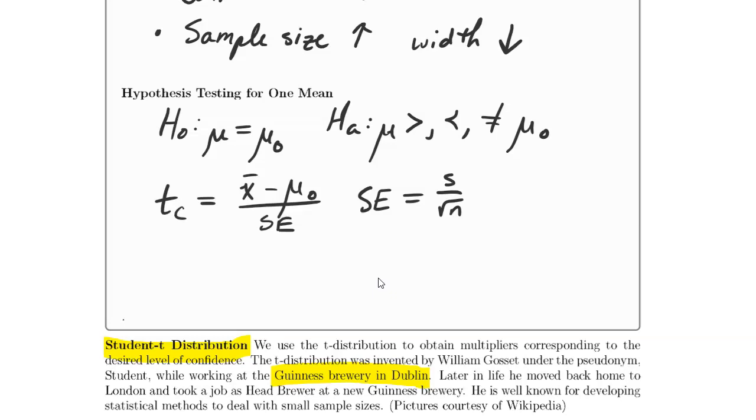The reason it's different for proportions is because the standard error is dependent on the value of the proportion. Since the standard error for means is not dependent on the value of the mean, we don't have to worry about that being different in confidence intervals and hypothesis testing.